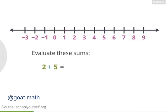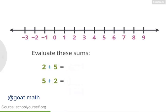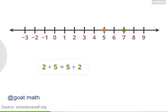Try a few more examples. What's 2 plus 5? Also see what happens when we switch the order, so we have 5 plus 2. Starting at 2 and moving 5 to the right leaves you at 7. And starting at 5 and moving 2 to the right also leaves you at 7. So 2 plus 5 equals 5 plus 2. In general, when you're adding numbers together, you can add them in any order and you'll always get the same answer.